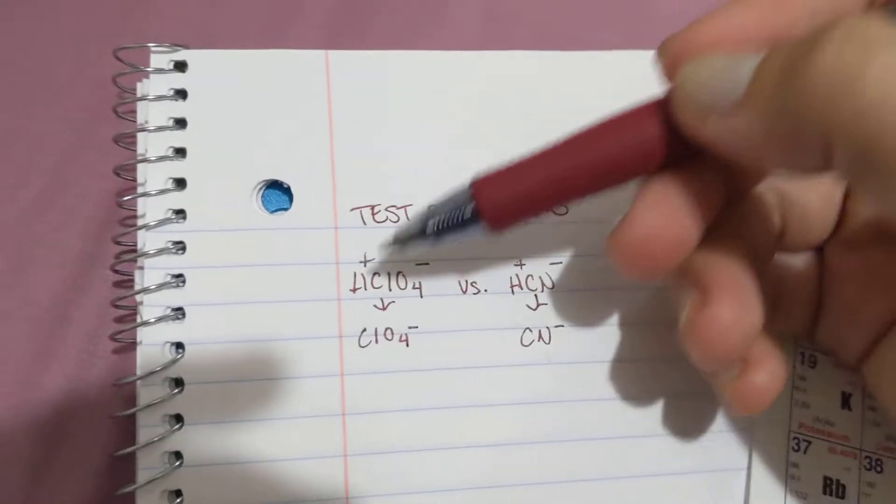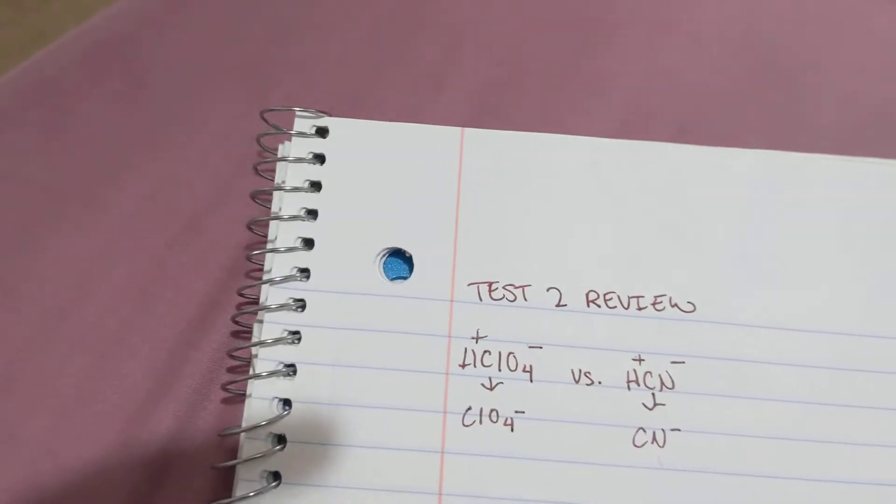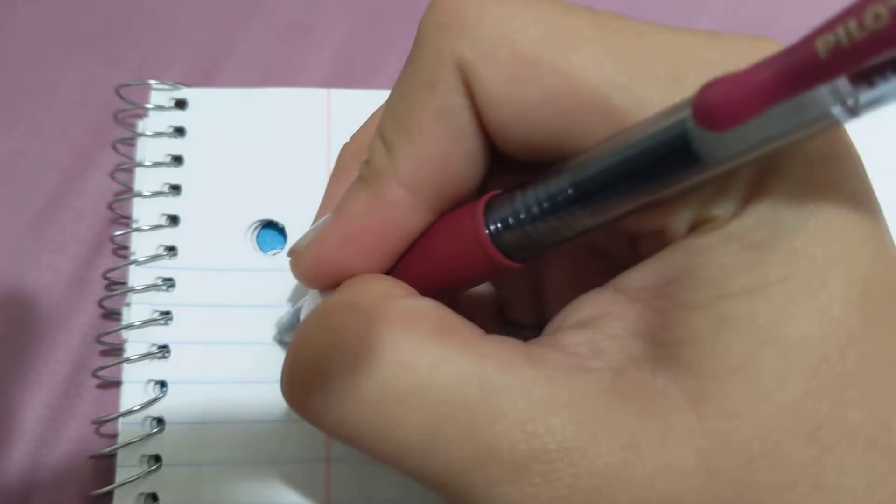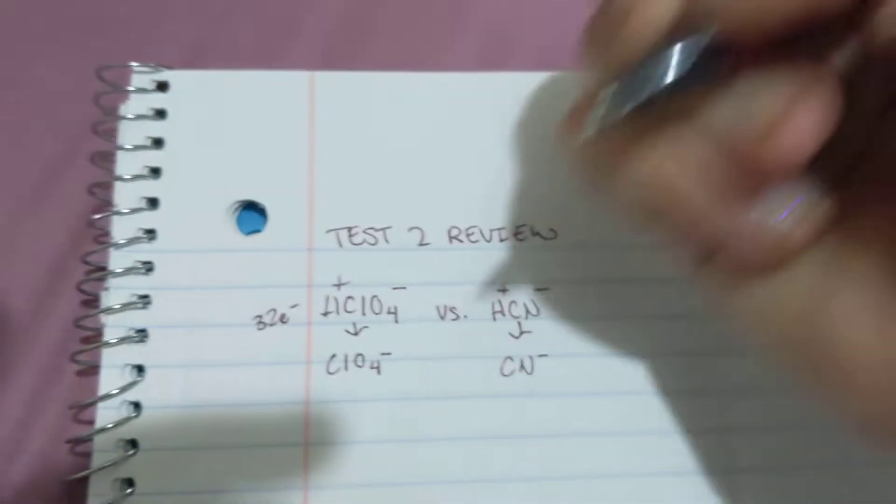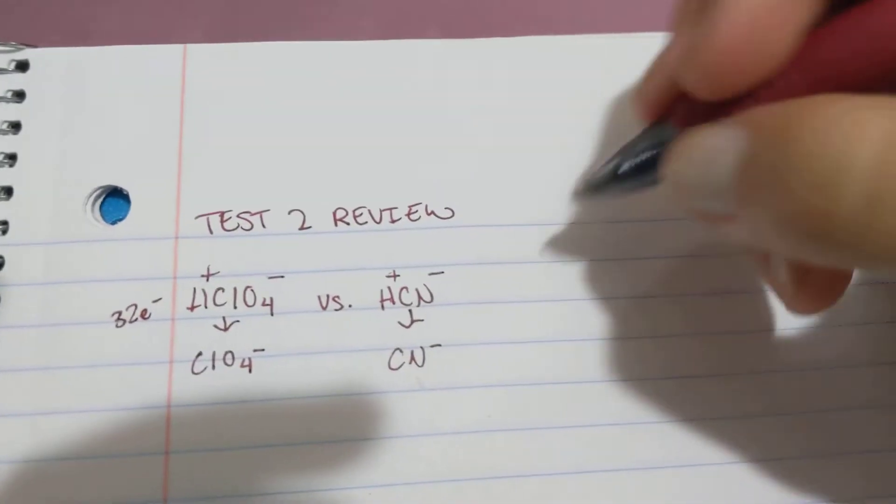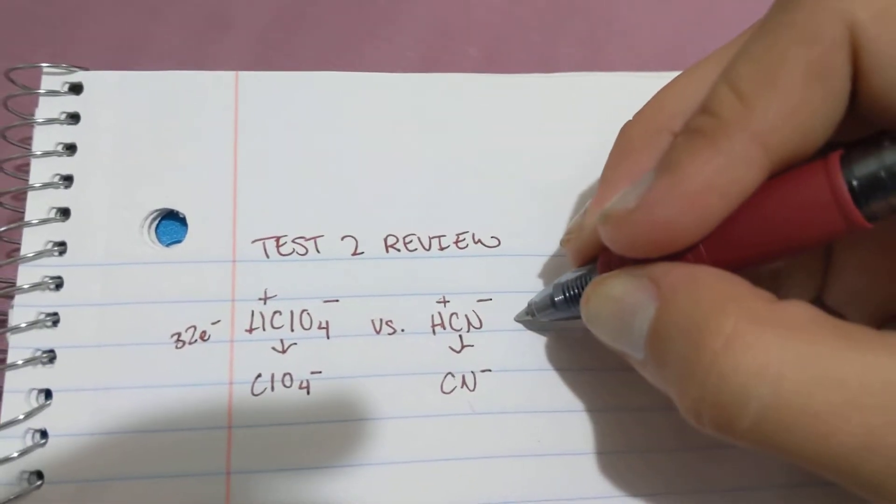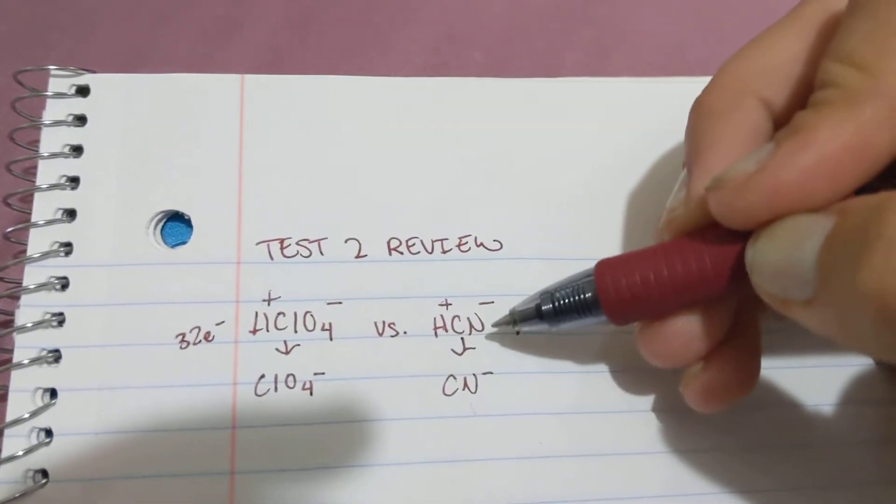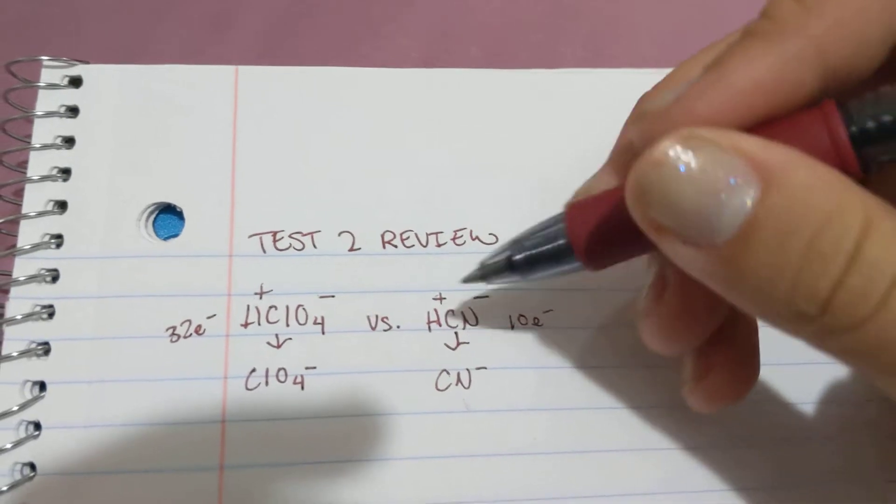H is 1, Cl is 7, O is 6 times 4, this is 32 electrons. This one over here is 10 electrons because H again, C is 4, N is 5.